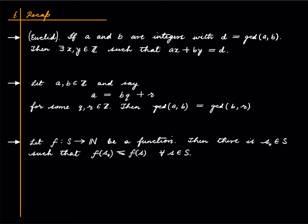If we have two integers which are not both zero so that you can take their GCD and if you call D their GCD, then there exist integers X and Y such that you can write D in this fashion. So you can write D as an integer linear combination of A and B.